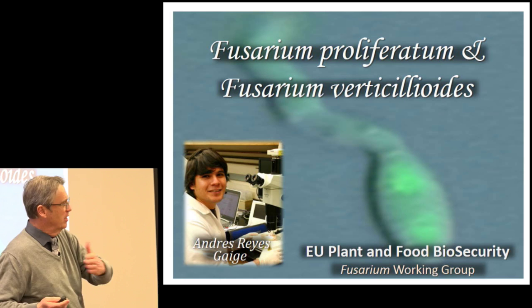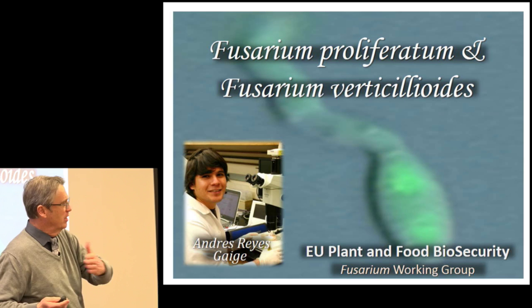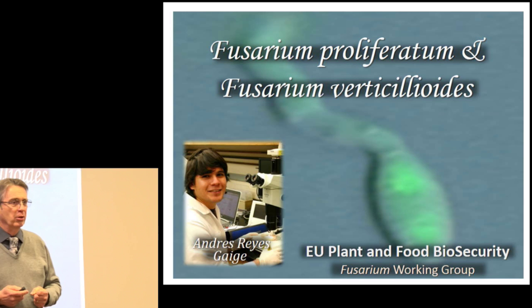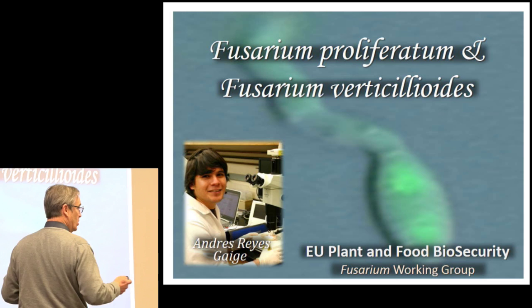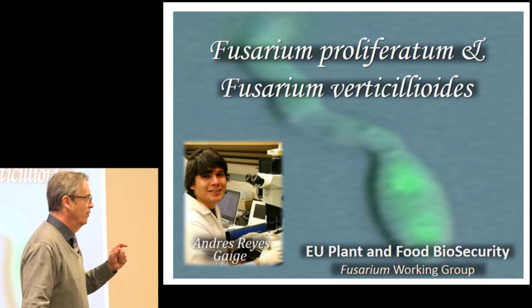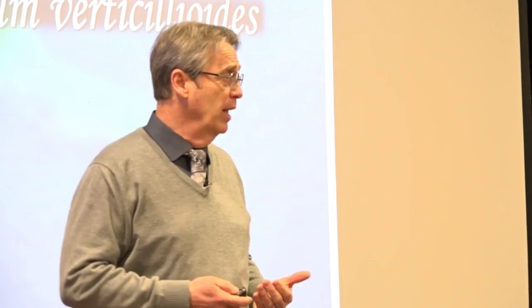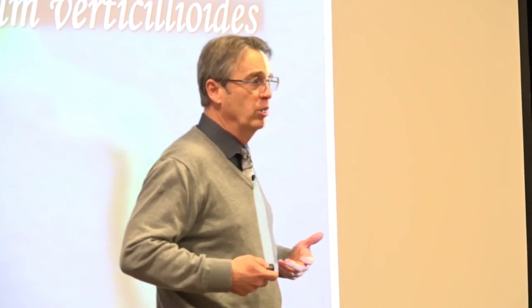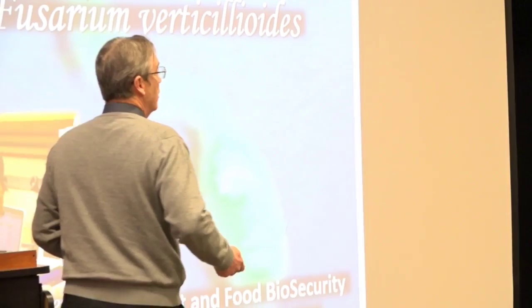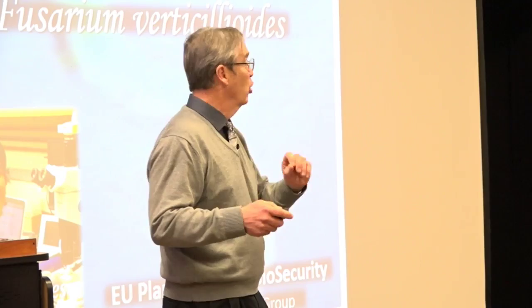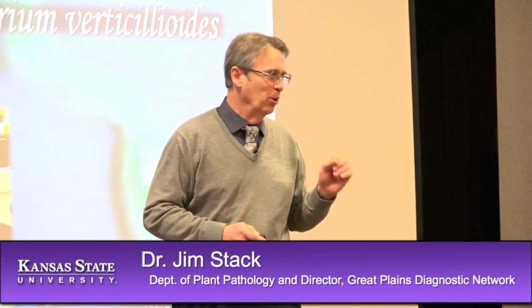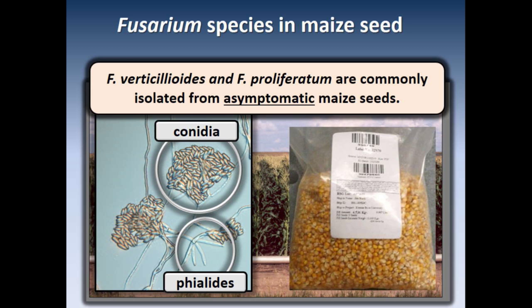That toxin has wide-ranging activities. It causes a disease called Leucoencephalomalacia in horses — basically, it liquefies their brain. It causes pulmonary edema in swine, and it causes esophageal cancer in humans. So it's a very bad toxin, but we're moving it around the world all the time. Importantly, some strains produce almost none of that toxin and others produce a lot — so it matters which strains you're moving around. We're trying to develop diagnostics to better understand that. This particular seed lot had Fusarium proliferatum in over 70 percent of the kernels.